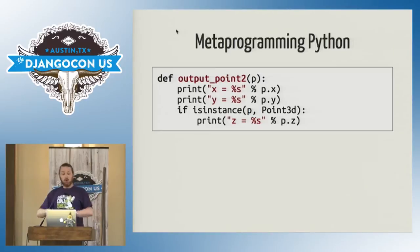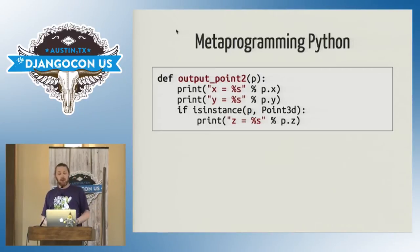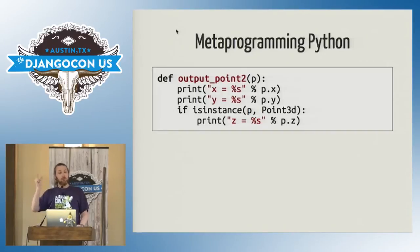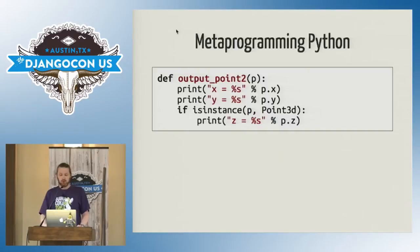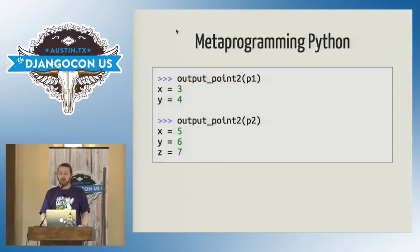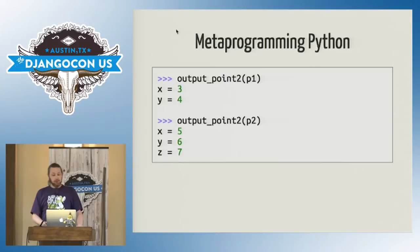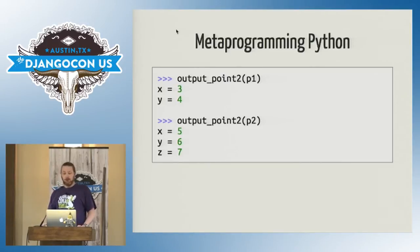You do a class check — one method called output point. We print the things we know are common: the x and the y coordinate. And then if this point that we've been given is an instance of a 3D point, print the z coordinate as well. That does work; there's nothing wrong with that. But a more Pythonic approach is to use metaprogramming.